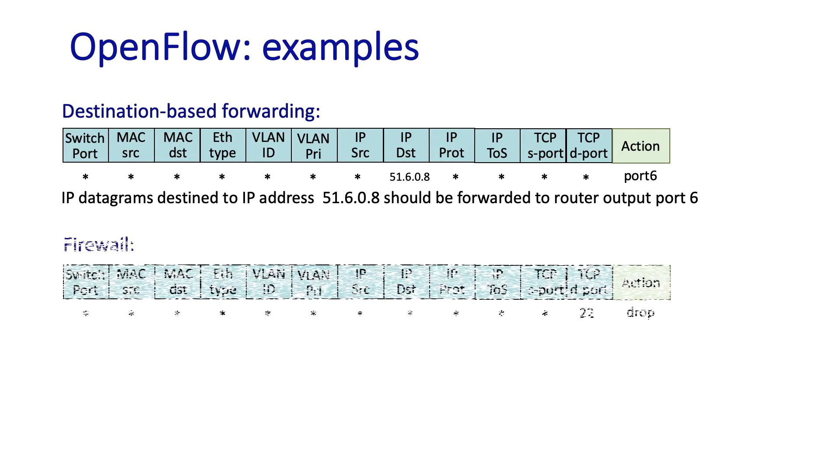The second example here shows how OpenFlow rules can be used to implement a firewall. The effect of this rule, which says block all datagrams destined to TCP port 22, is effectively to shut off SSH service, which uses port 22, downstream from this router. Anyone trying to SSH to a host reachable through this router would be blocked. That's to say their datagrams trying to open an SSH connection at some remote host would be dropped here at this router.